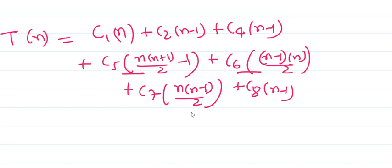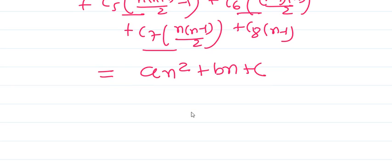Now if you notice, the coefficients C5, C6, and C7 - here you will find a term which is of order n square. So basically if you simplify this, then you will get this type of equation: a n square plus b n plus c. And hence we can say that it's nothing but big O of n square.